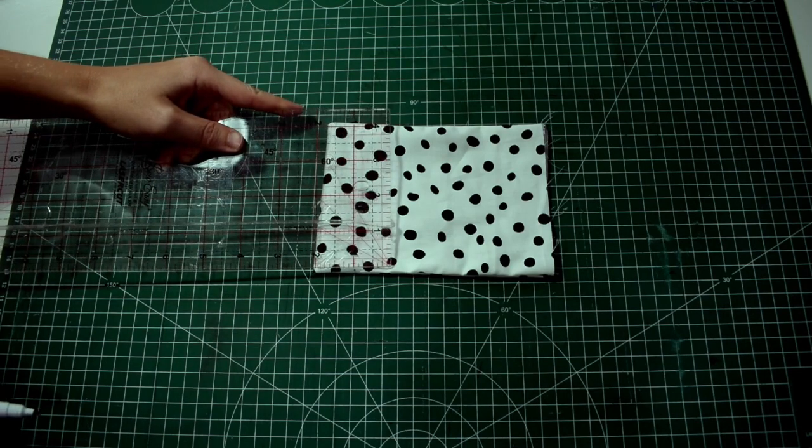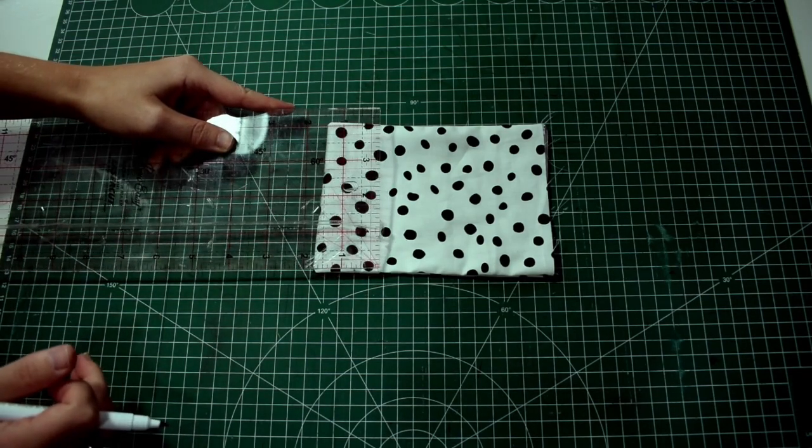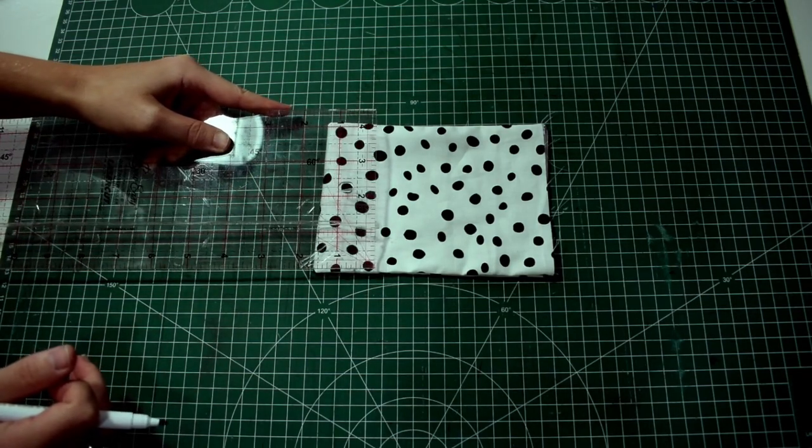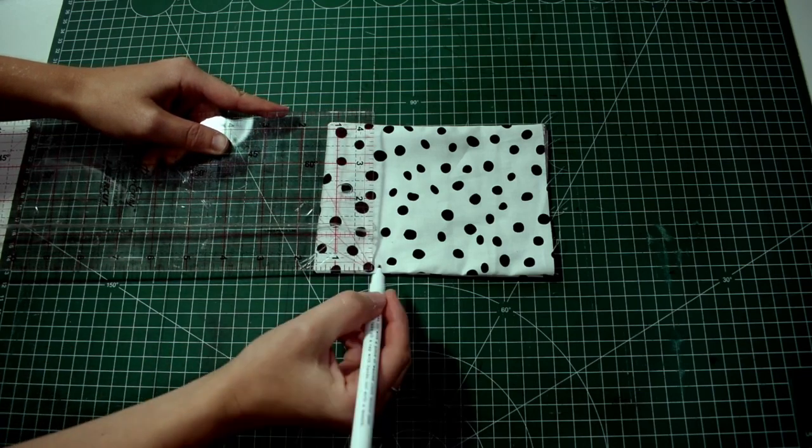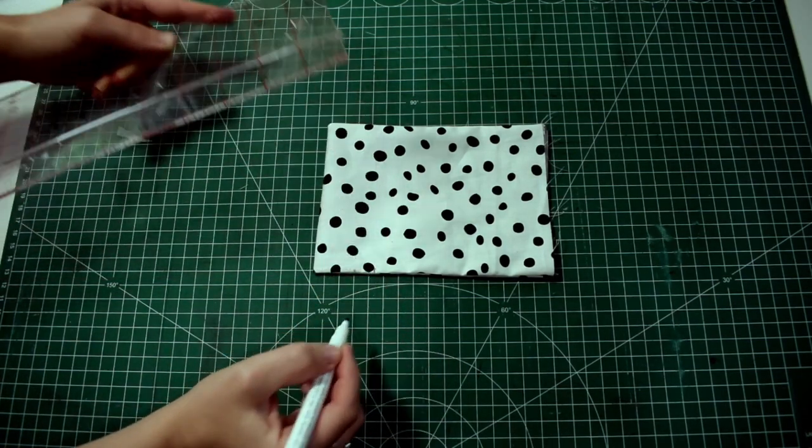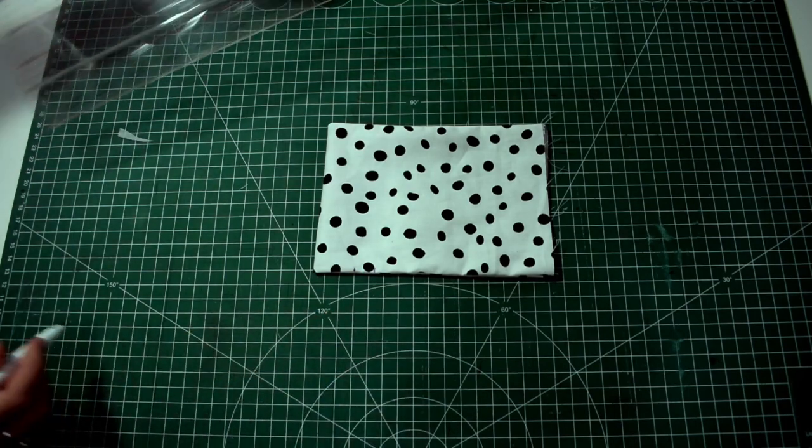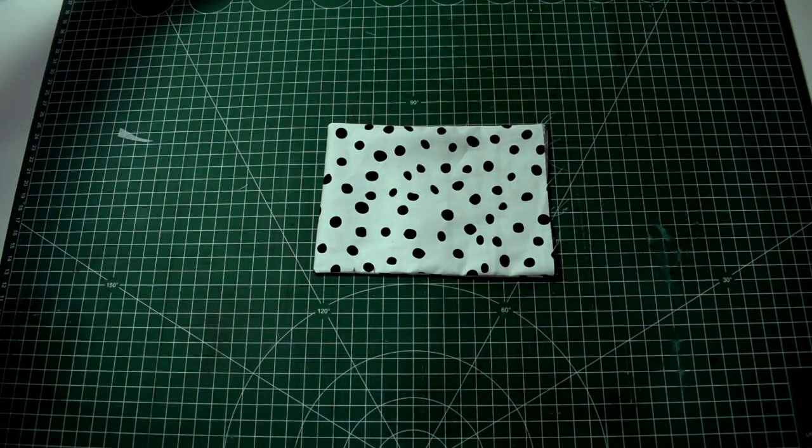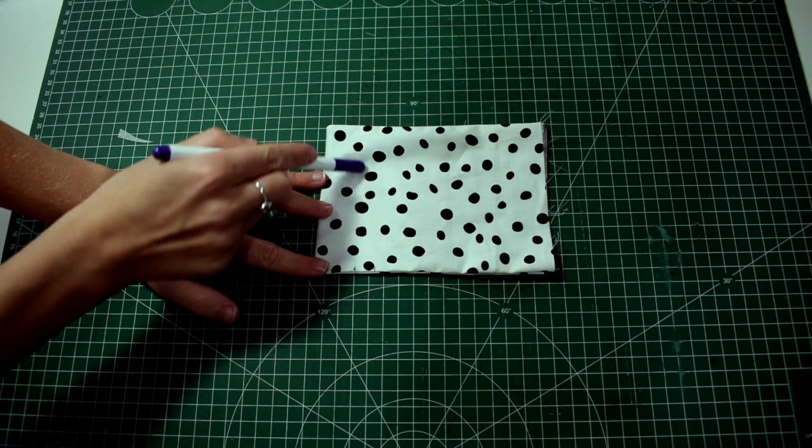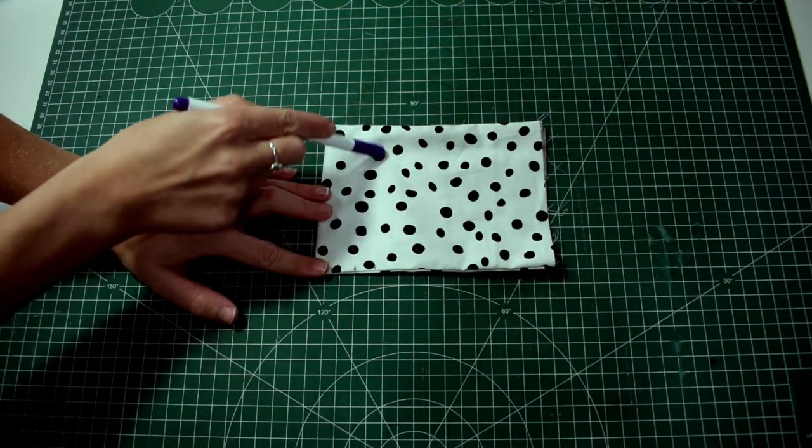We're going to measure from the closed end of the fabric an inch up. Mark this out and then from that mark we're going to measure half an inch up. We're going to sew two straight lines down from the measurements we have made.